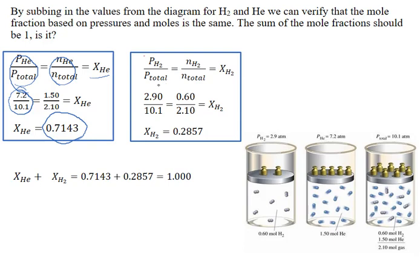For hydrogen we can do the same. If we take the partial pressure of hydrogen and divide it by the total pressure, that equals the number of moles of hydrogen divided by the total number of moles — giving us the mole fraction. The mole fraction for hydrogen is 0.2857. As discussed before, the mole fractions should add up to a total of 1.